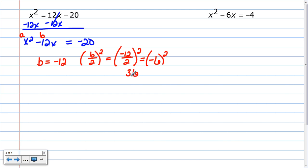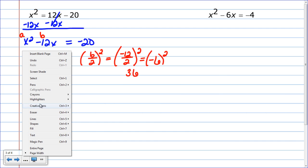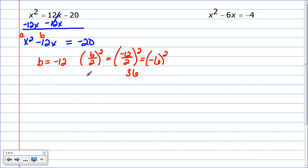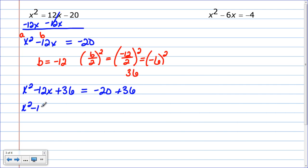I'm turning the left-hand side into a perfect square trinomial, because perfect square trinomials are super easy to factor. So I'm going to take x squared minus 12x and add 36 to complete the perfect square. But if I do something to one side, I have to do the same thing to the other side of the equal sign. So I add it to both sides, giving me x squared minus 12x plus 36 equals 16, because negative 20 plus 36 is 16.